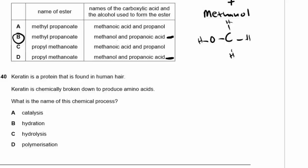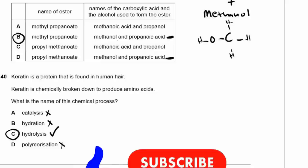Question 40. Keratin is a protein found in human hair. Keratin is chemically broken down to produce amino acids. What is the name of this chemical process? Catalysis — no, that's about using a catalyst. Hydration — that's addition of water. Hydrolysis — yes, using water to break up a larger molecule such as a protein into its constituent amino acids. Polymerization — that's forming a larger molecule from smaller ones. The answer is C — hydrolysis. That is the last question on this exam.